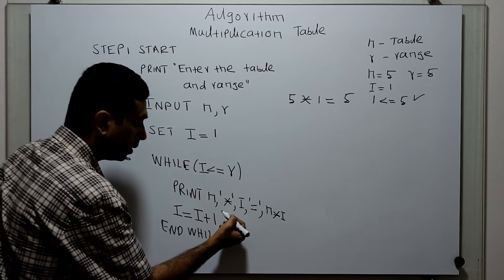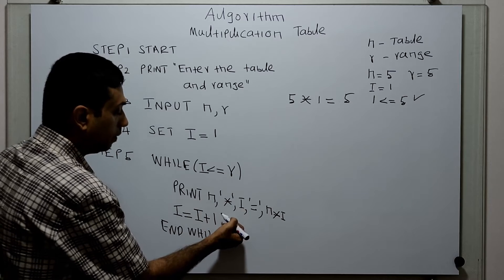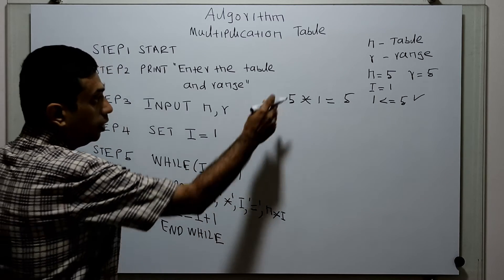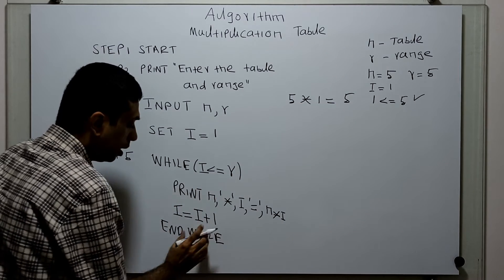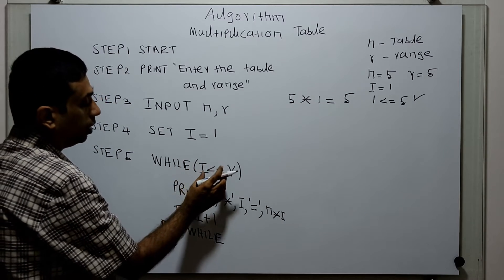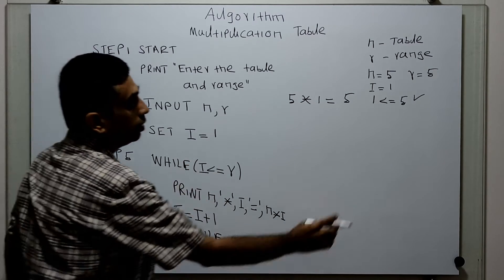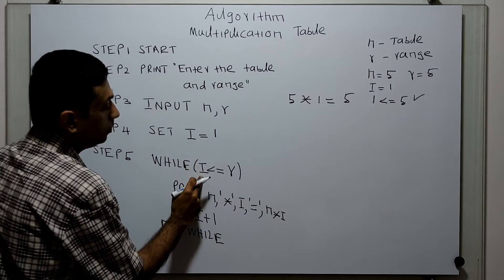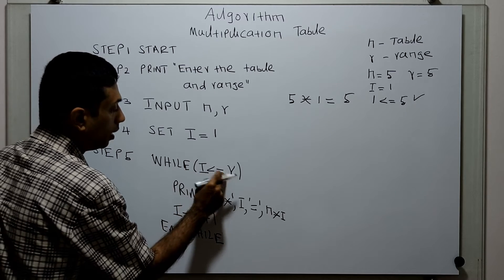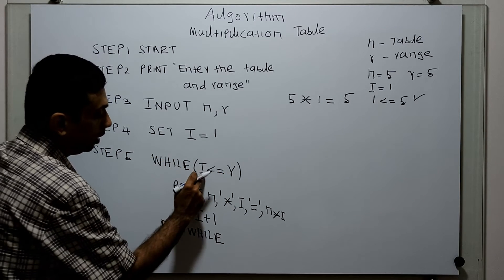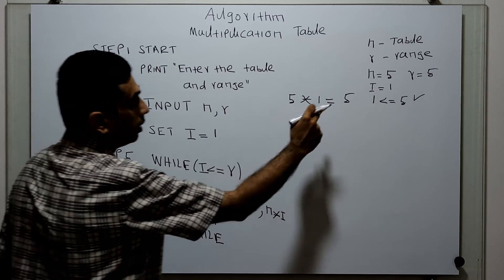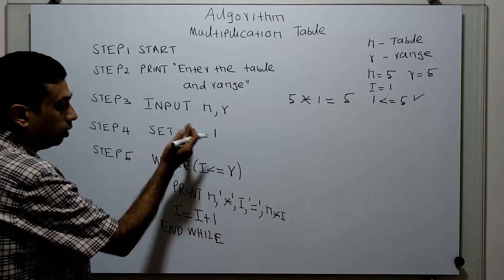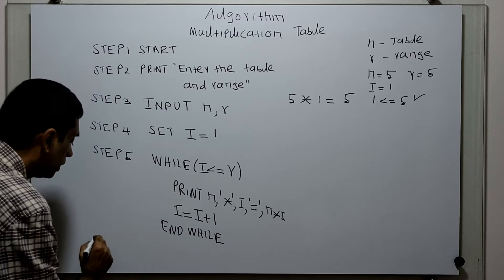The statement will get printed with the incremented value of i, so it is a loop that keeps printing the value in this format until i is less than or equal to r. Once the value of i becomes greater than r, the condition becomes false and the control comes out of the loop. Step 6: stop — this is the logical end of the algorithm.